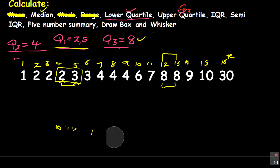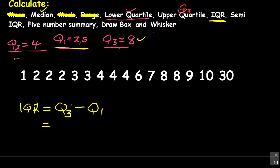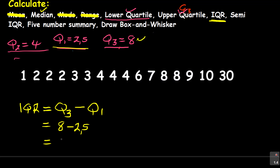Now you have done this — what is the next step? You are now able to find the interquartile range. The IQR is the interquartile range. How do you find it? You find it by saying upper quartile Q3 minus lower quartile Q1. So you subtract those two numbers: 8 minus 2.5. That gives you the interquartile range — 5.5.